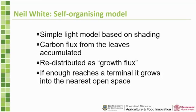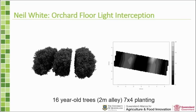Neil White has been working on the light models using a self-organizing model with a simple shading-based light calculation rather than computing all light explicitly. Carbon flux accumulates and is redistributed through the tree as growth flux; when enough reaches a terminal it grows into the nearest open space. This creates canopy models and lets us look at light distributions modeled on the physics of light from a daily sky model. We can examine how different management systems like pruning affect light distribution at the canopy floor — particularly relevant for macadamias, which are harvested from the ground.